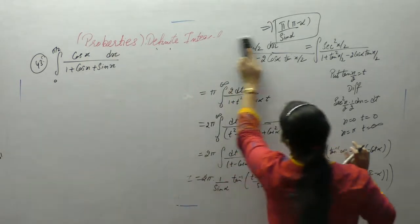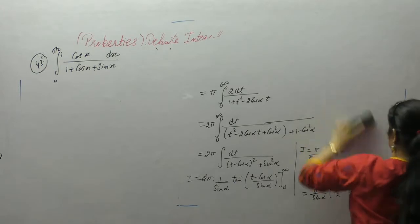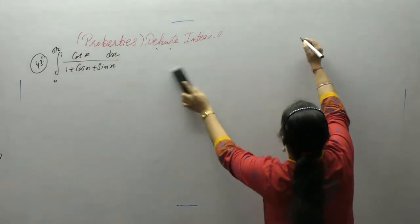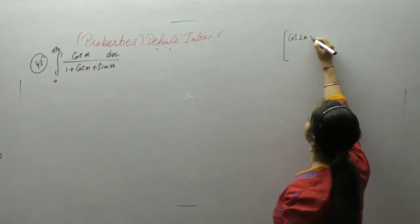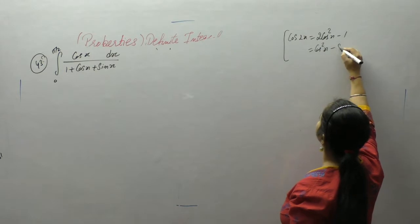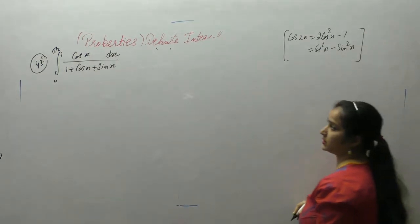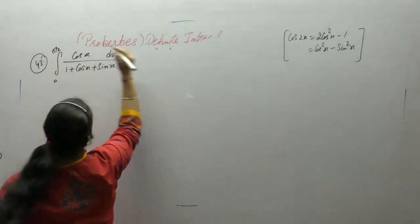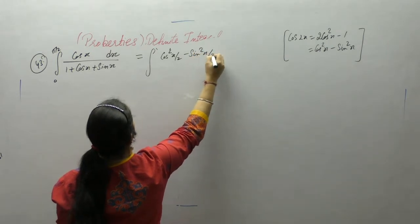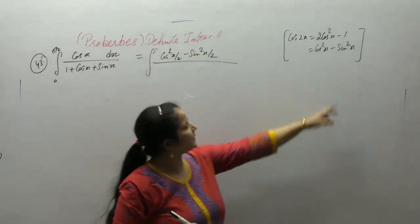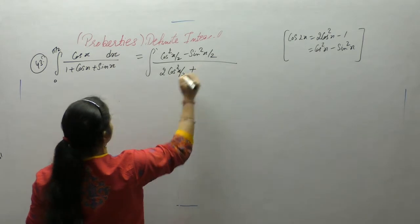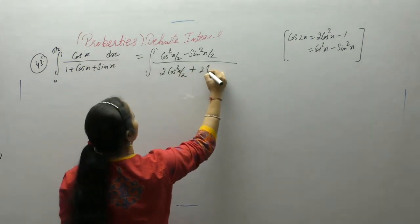We know the formula for cos 2x. Cos 2x is 2 cos square x minus 1, or cos square x minus sin square x. Instead of cos x, we can write here cos square x/2 minus sin square x/2. 1 plus cos x is equal to 2 cos square x/2. Sin 2x is 2 sin x cos x.